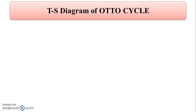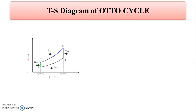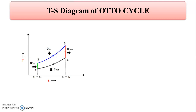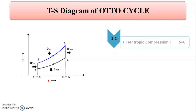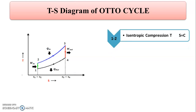Now we will discuss the TS diagram of the Otto Cycle, that is the Temperature-Entropy diagram. The figure shows the TS diagram, in which process 1 to 2 is isentropic compression. During isentropic compression, temperature increases from T1 to T2, and since it is isentropic, entropy remains constant — S1 equals S2.